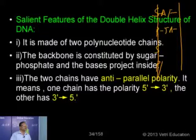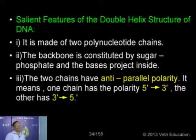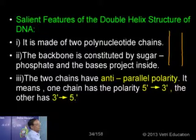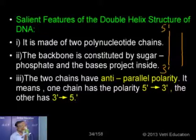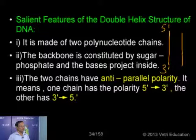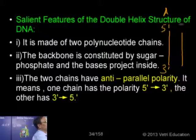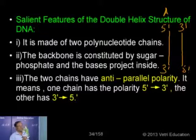The two chains exhibit what is called anti-parallel polarity. One strand has polarity 5' to 3' — starting with 5' end and ending with the 3' end. At the 5' end we have a free phosphate group, and at the 3' end the sugar has a free hydroxyl group. The other strand runs anti-parallel, starting with 3' and ending with 5'. That is why normally the two strands exhibit anti-parallel polarity.